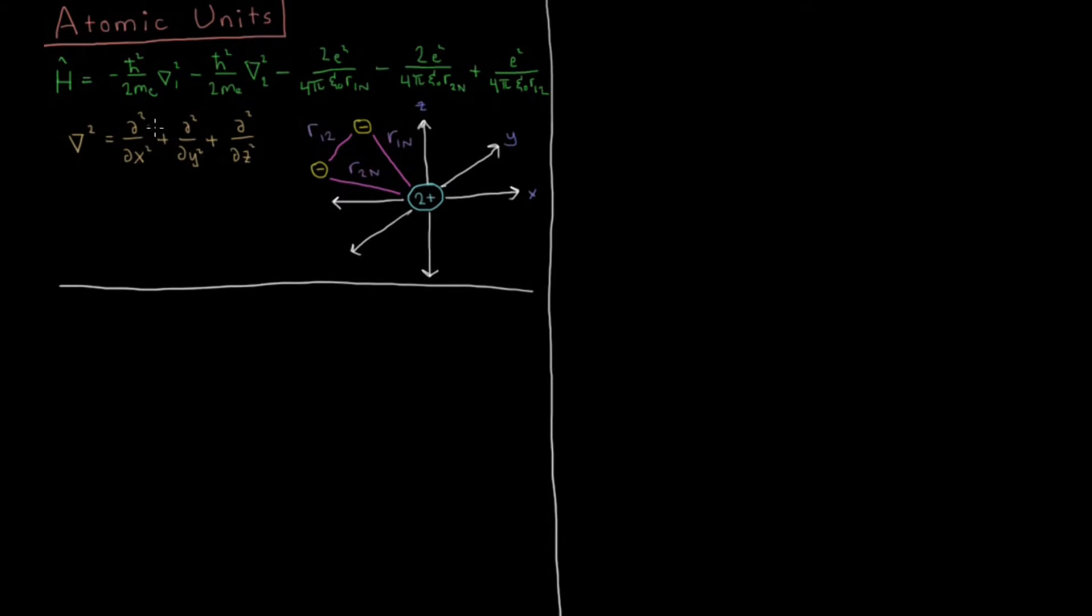When we last looked at the helium atom we described its Hamiltonian. It's got five terms in total, assuming we have a fixed nucleus. It's got the kinetic energy of electron one: minus h-bar squared over two times mass of the electron, Laplacian operator which is a sum of partial derivatives with respect to each spatial dimension. The second electron has the same types of terms, so helium has two electrons there.